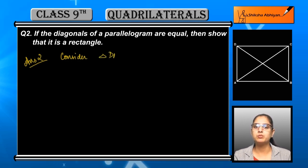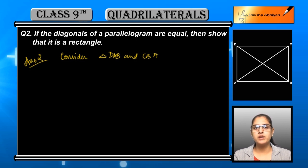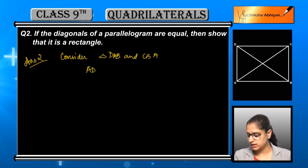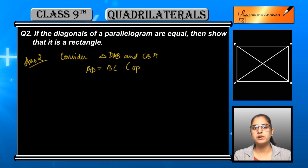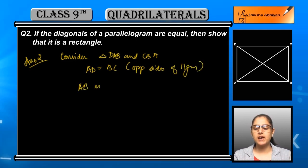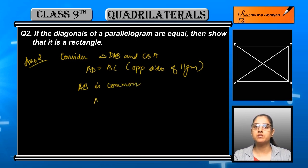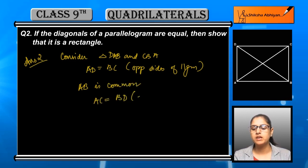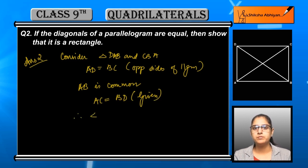We will consider two triangles in parallelogram ABCD. The triangles are DAB and CBA. First, AD is equal to BC because they are the opposite sides of a parallelogram and are equal. Secondly, AB is common in both triangles. Thirdly, AC is equal to BD — this is given.